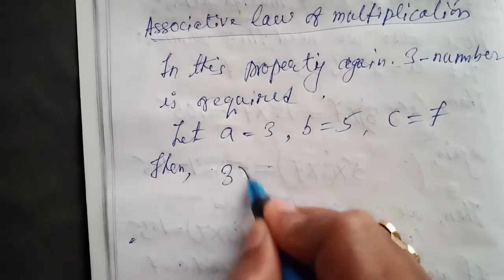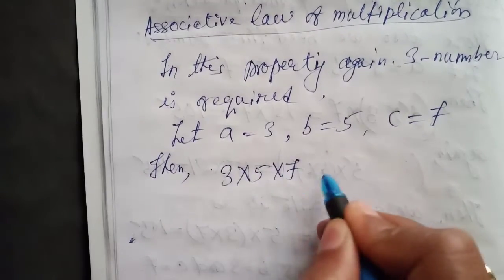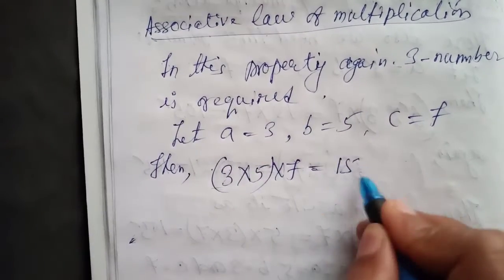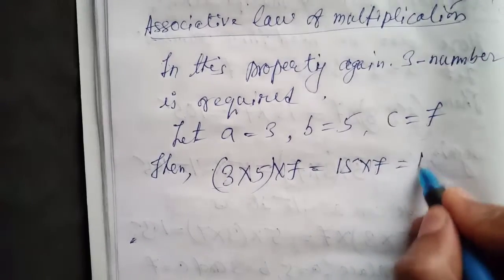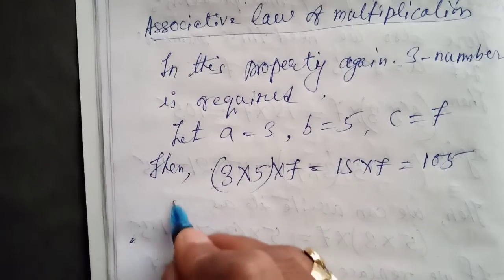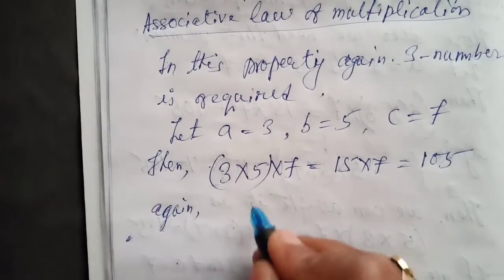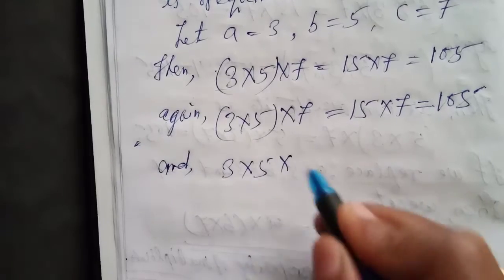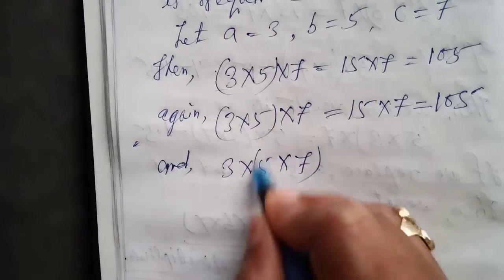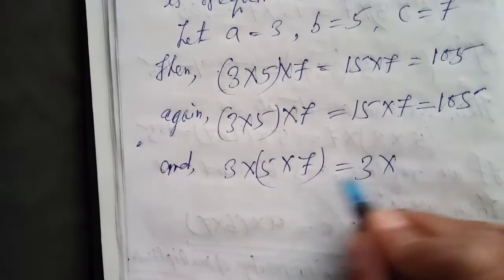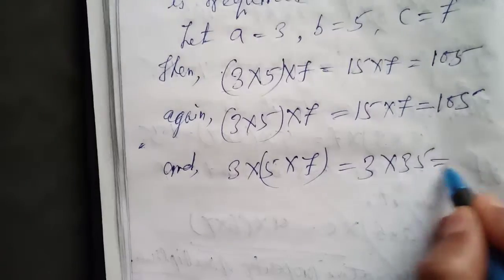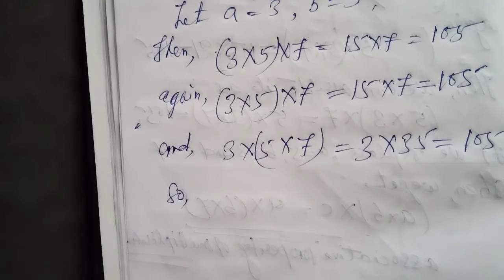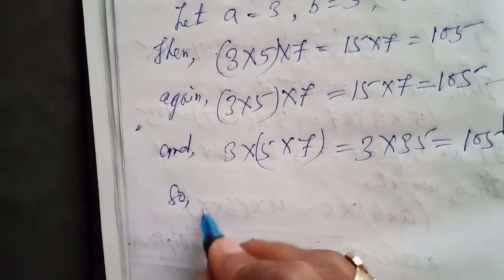Then (3 times 5) times 7, taking the bracket here, gives 15 times 7 equals 105. Again, 3 times (5 times 7), now keeping the bracket in the next position, gives 3 times 35 equals 105. So in both cases the answer is the same.